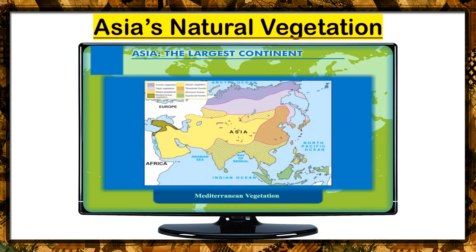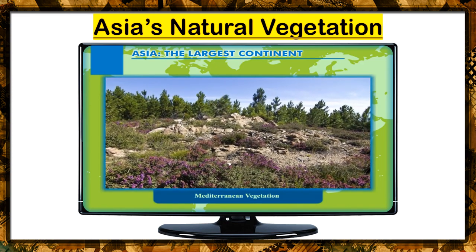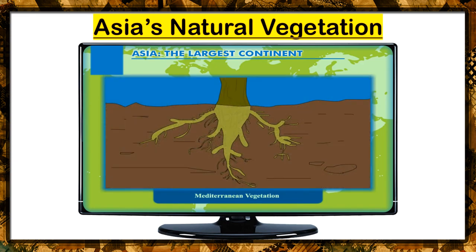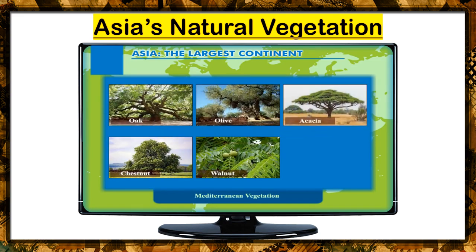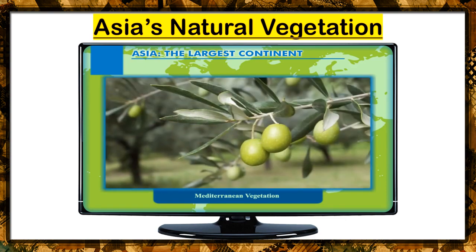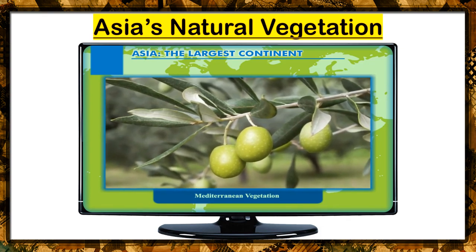Mediterranean vegetation is found in areas bordering the Mediterranean Sea. It consists of trees that can survive the dry summer season. These plants and trees have long roots that penetrate deep into the ground, thick leaves and barks that control the rate of evaporation. The main variety of trees that grow well in this region are Oak, Chestnut, Walnut, Olive, Acacia, and Laurel. Most of the natural vegetation has been replaced by fruit trees that grow well in this land.